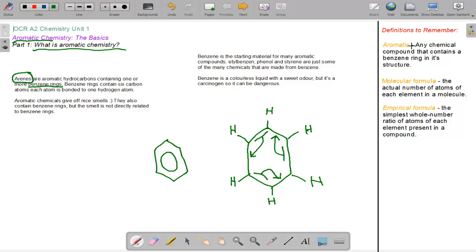The definition to remember is that aromatic is any chemical compound that contains a benzene ring in its structure. Molecular formula is the actual number of atoms in each element in the molecule, and empirical formula is the simplest whole number ratio of atoms for each element present in the compound. It's extremely important in benzene that you know that C6H6 is its molecular formula and its empirical formula is CH.